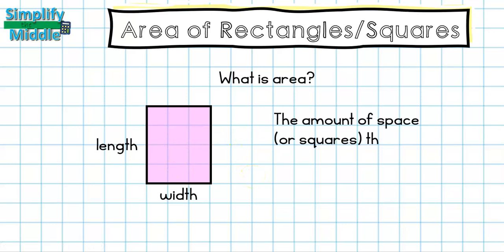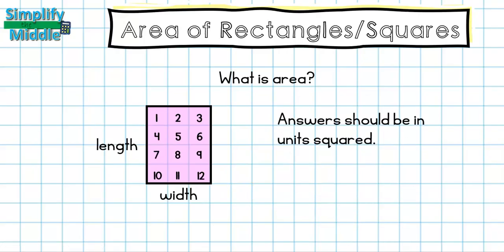Another way to think of this is it is the amount of space or squares the shape takes up. So if I was to count the amount of squares that are in this shape, I would find that there are 12 squares. So my answer for area is always going to be in units squared. In this case, it's 12 units squared.